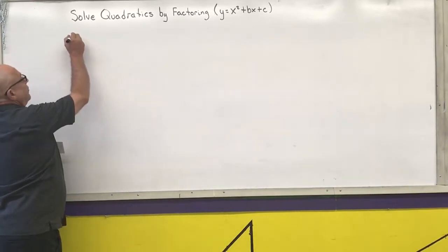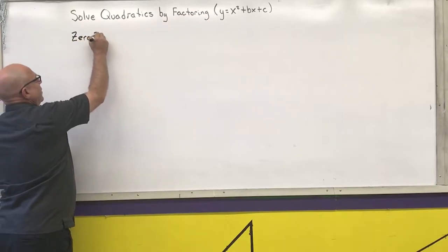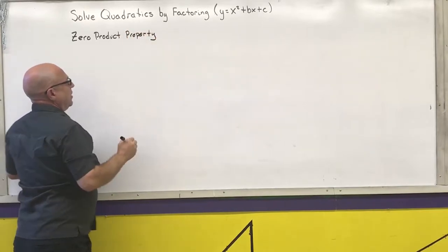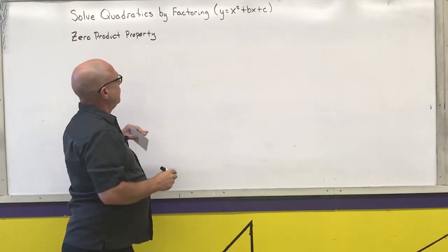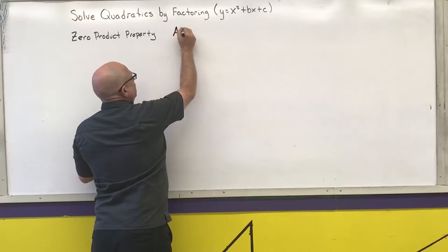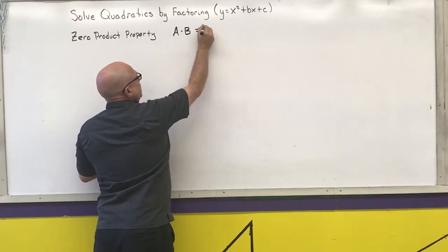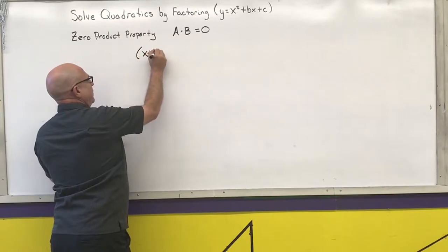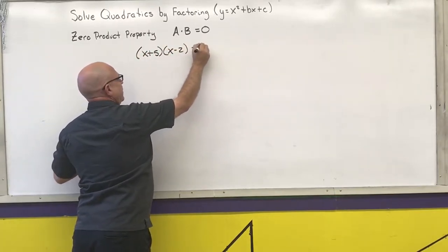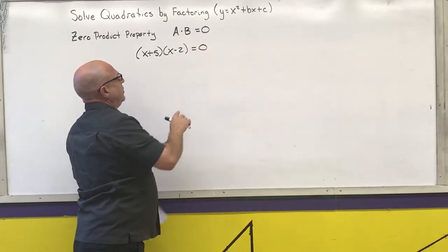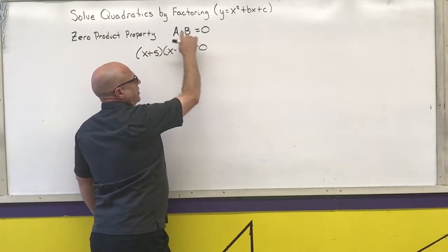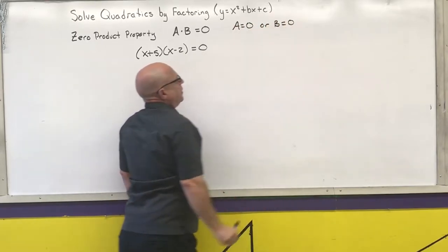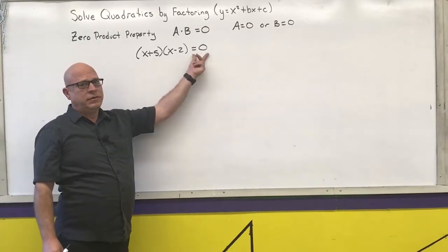First I want to remind you of the zero product property. For solving equations, if I have an equation where two expressions multiplied together equal zero — for example, (x+5)(x-2) — that's two expressions being multiplied together. The only way to get zero from multiplication is if a equals zero or b equals zero. We're going to use that fact to solve our quadratics.